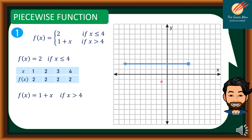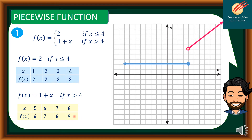For f(x) = 1 + x if x > 4, using the table of values: if x = 5, f(x) = 6; x = 6 gives 7; x = 7 gives 8; x = 8 gives 9. Graphing this, since x > 4 we exclude x = 4, shown as a hollow point. This is the complete graph of the piecewise function.